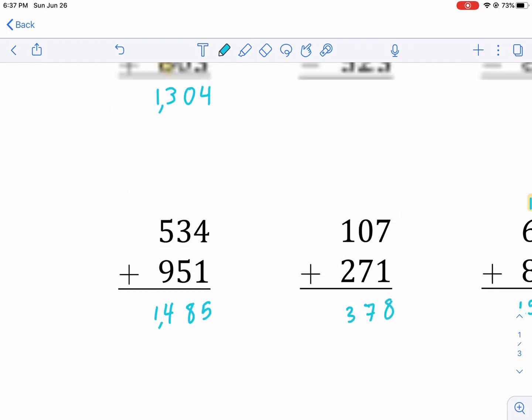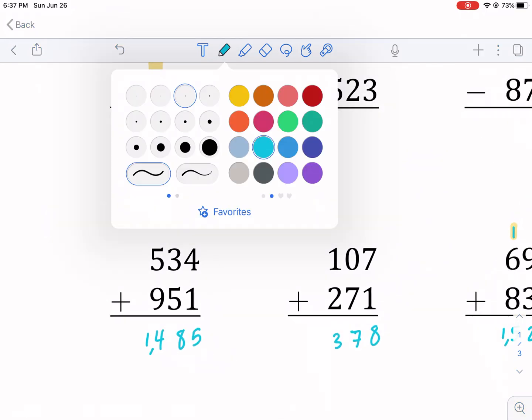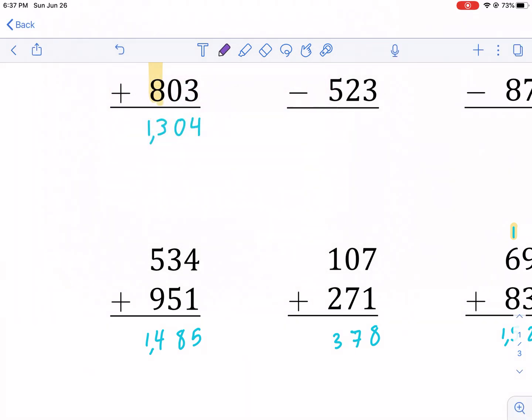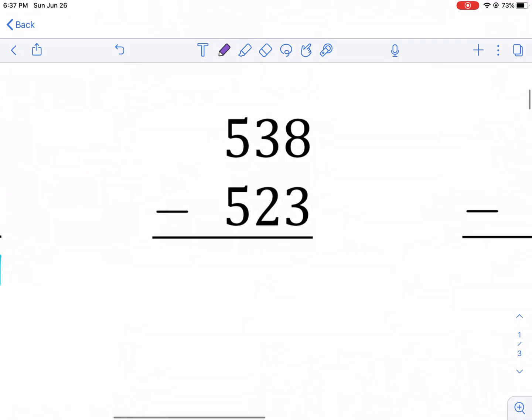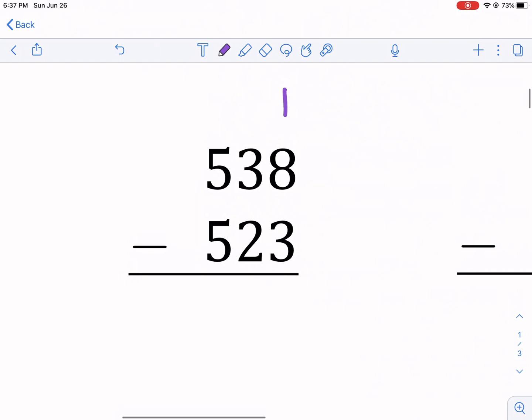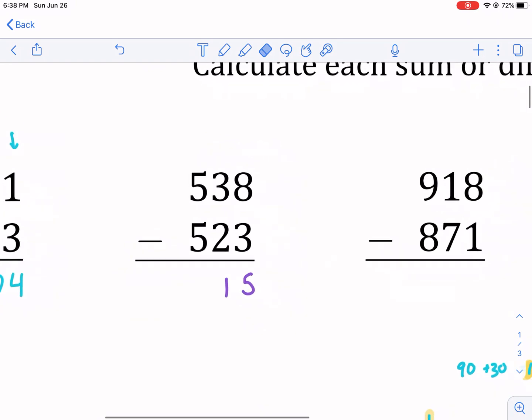Subtraction is a little bit different, so let's highlight some of the differences right now. Same procedure. You're going to do the ones place, the tens place, and the hundreds place, and you're going to take turns subtracting each one. For this first example, it's pretty straightforward. We're going to do 8 minus 3. That is 5. 3 minus 2, 1. 5 minus 5 is 0. But of course, you don't write the 0 in front of 15, so get rid of that and just leave the 15, and that's going to be your answer.